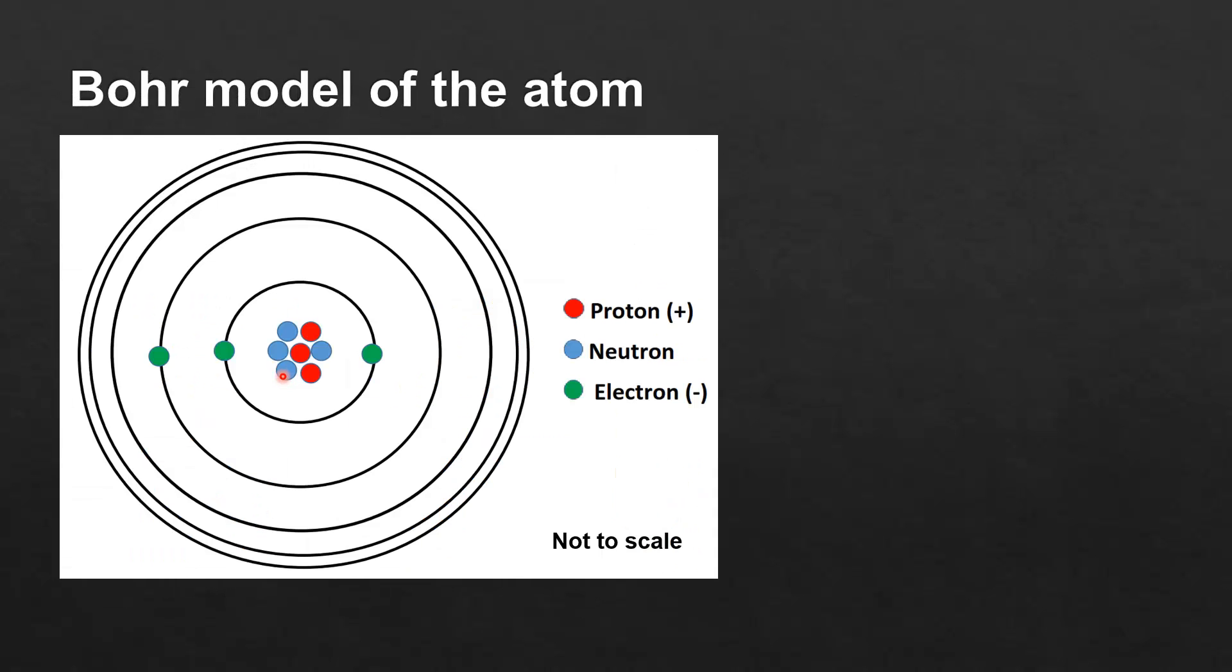So next we look at the structure of an atom, specifically the Bohr model of the atom. So in the Bohr model of the atom, the protons which are these red circles and the neutrons which are the blue circles are located within the nucleus of the atom. And the electrons which are the green circles, they are located in energy levels or shells around the nucleus.